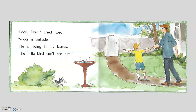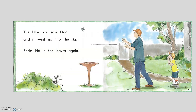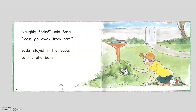Do you remember then what they decided to do? First, Dad walked over, and the bird flew away, and Socks hid. And then Rosa got mad at Socks and said, 'You're being very naughty. Please go away.' But Socks hid in the leaves.